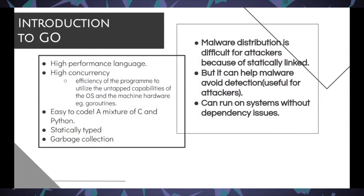Go has a lot of features. It's a high-performance language — really fast, compiles quickly. It has high concurrency, meaning it can utilize the capabilities of the OS using Go routines so multiple threads can run at the same time. It's easy to code — a mixture of C and Python. It's statically typed, so variables don't need explicit declaration; the compiler decides during compile time. Garbage collection means we don't have to worry about freeing pointers or dangling pointer issues.